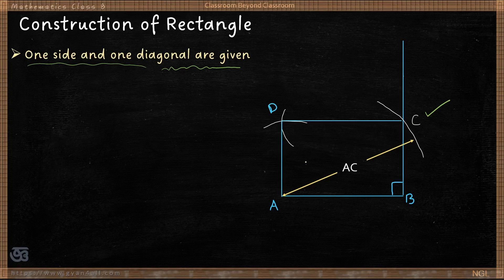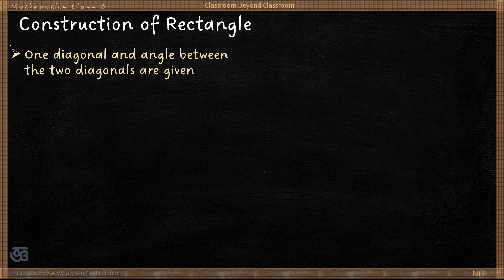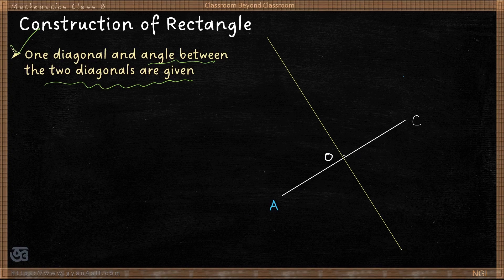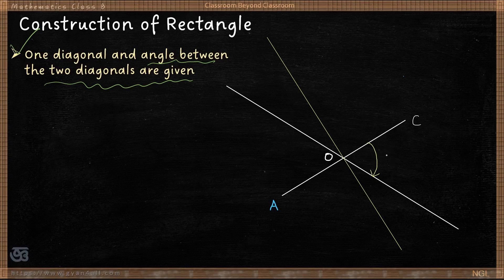The third condition is if one diagonal and the angle between the two diagonals are given. First draw the given diagonal, say AC. Since diagonals bisect each other in a rectangle — as in any parallelogram — locate the midpoint O of diagonal AC by drawing a perpendicular bisector, so AO equals OC. At point O, construct the given angle between the two diagonals, say X degrees, and draw a line through O at that angle.